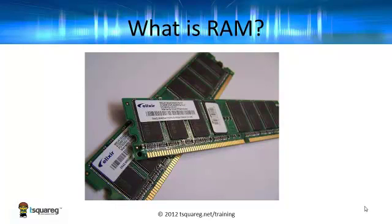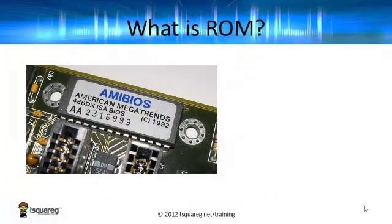What you're looking at here is a photograph of a couple of RAM sticks, and you can see that there is a sticker with some very interesting numbers on them. In a moment we're going to talk about what some of these numbers mean and a couple of calculations we can run through. Before we get there, we need to identify what's going on in terms of ROM, which is a different kind of memory.